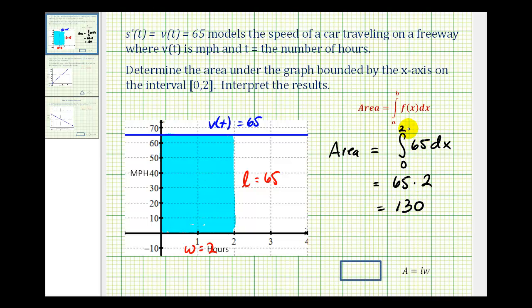This definite integral, which represents this area, equals 130. Let's talk about what this means. We're multiplying the rate in miles per hour times the time in hours, which should remind us of the distance formula: distance equals rate times time. So this 130 represents the total distance traveled from t equals zero to t equals two over the first two hours.